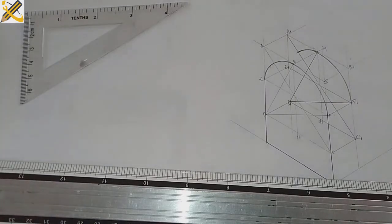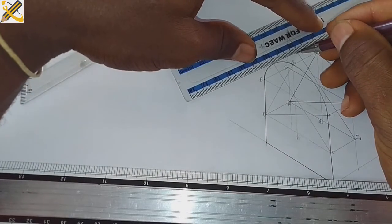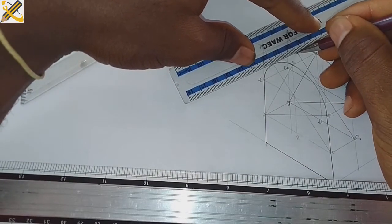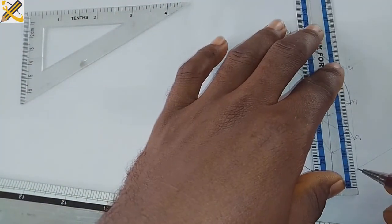The next procedure is to pick my ruler and join this part down here. I'm going to join it with a straight line. Having done that, I'm going to thicken the other parts.